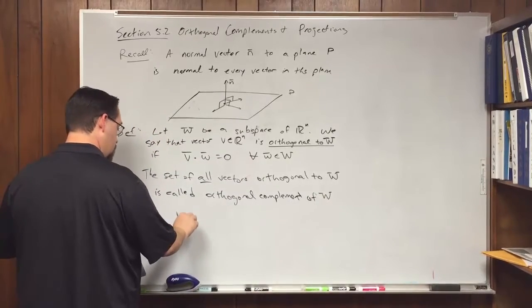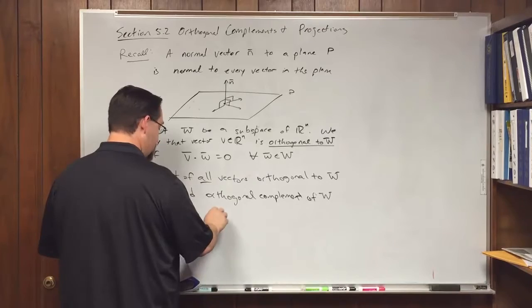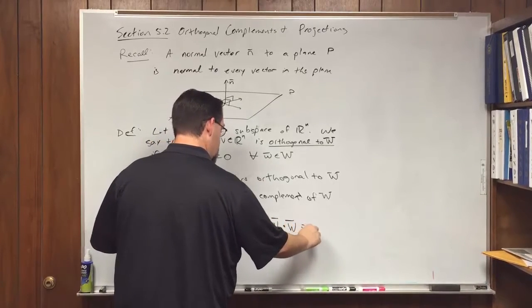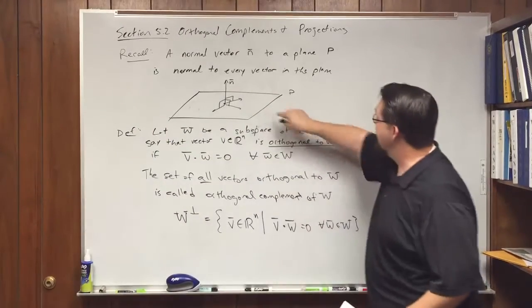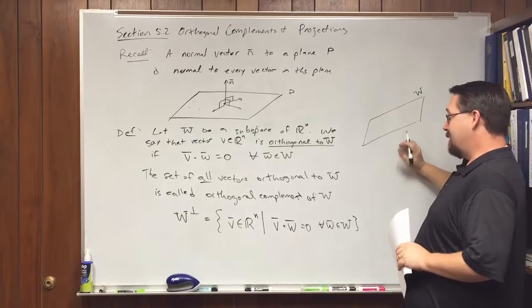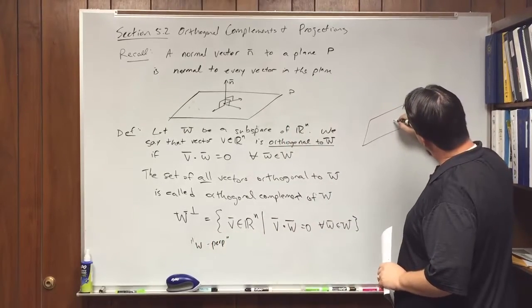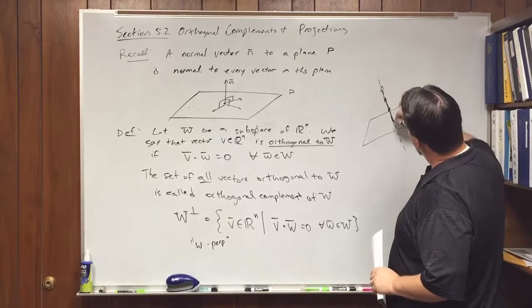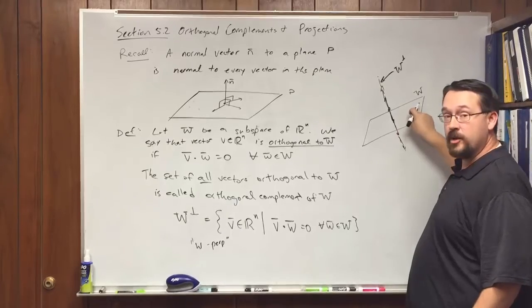We denote the orthogonal complement with a capital W and the perpendicular sign — W perp — which is the set of all vectors V out of Rn such that V dotted with W is zero for all W in that space. If we start with some plane as W, then W perp is anything along the perpendicular direction — so all vectors going this way or that way. That is W perp, because it's the set of all vectors perpendicular to W.